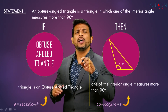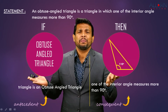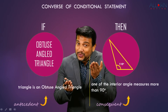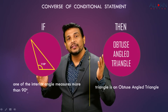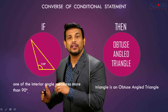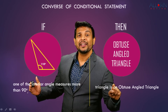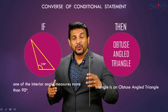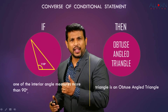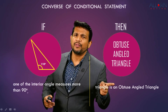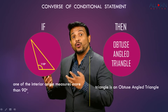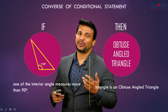Now let's write the converse of this conditional statement by swapping the antecedent and the consequent. The converse is: if one of the interior angles measures more than 90 degrees, then the triangle is an obtuse angle triangle. This is true — if any angle of a triangle measures more than 90 degrees, it is an obtuse angle triangle.